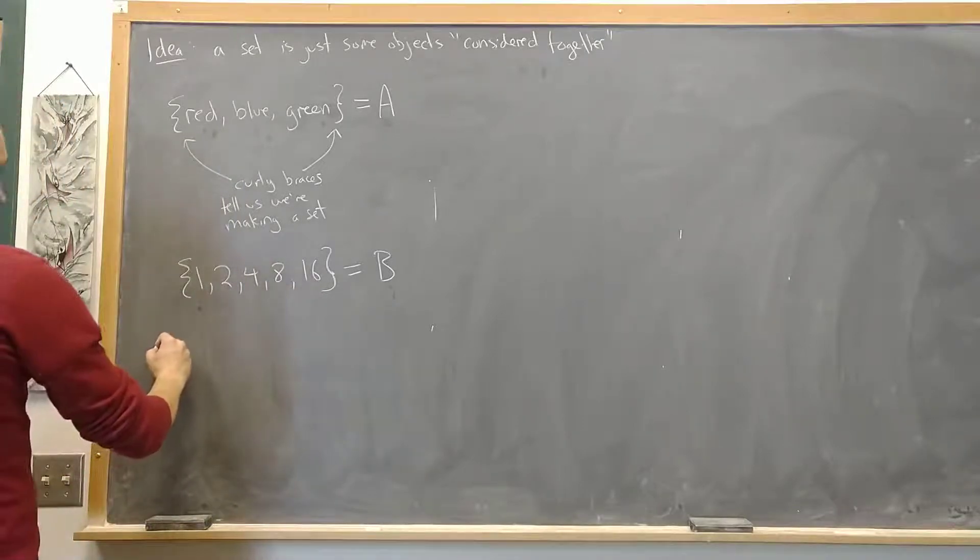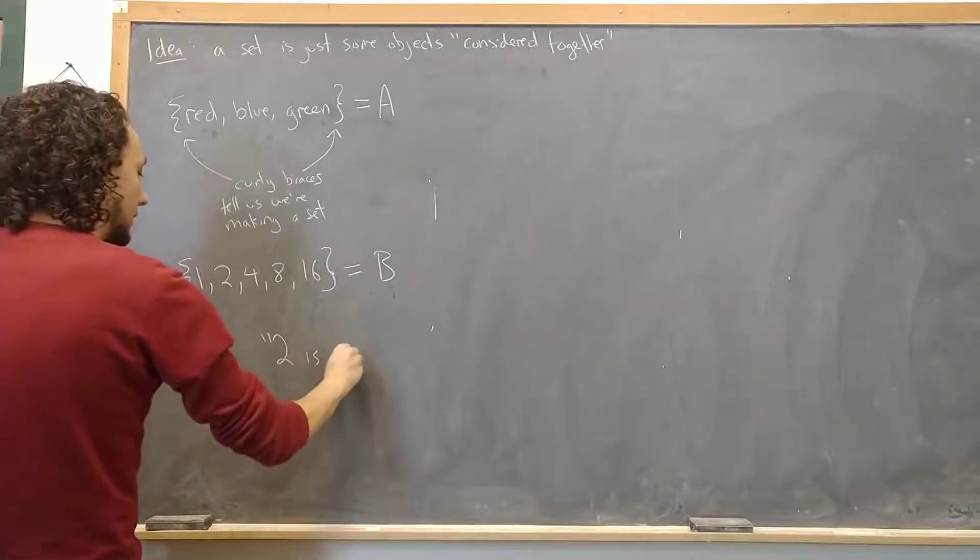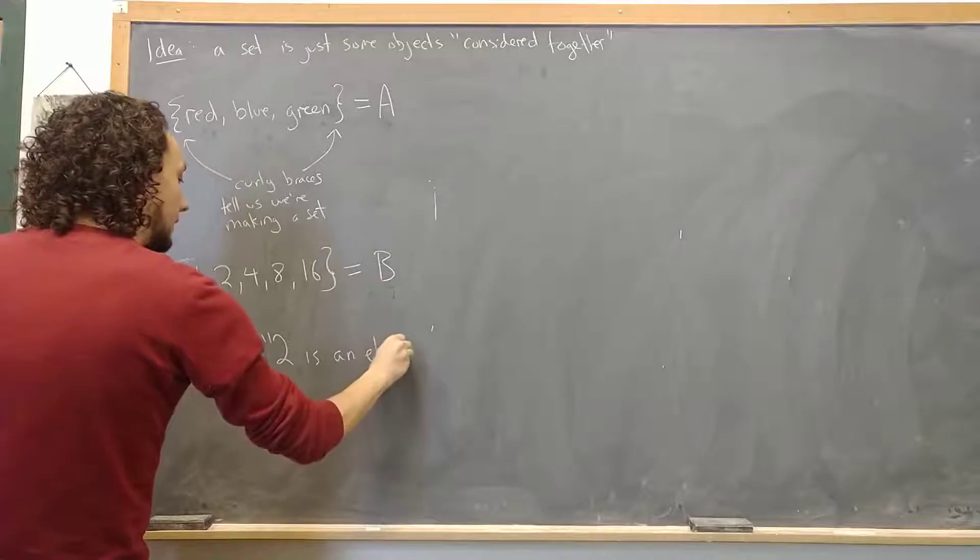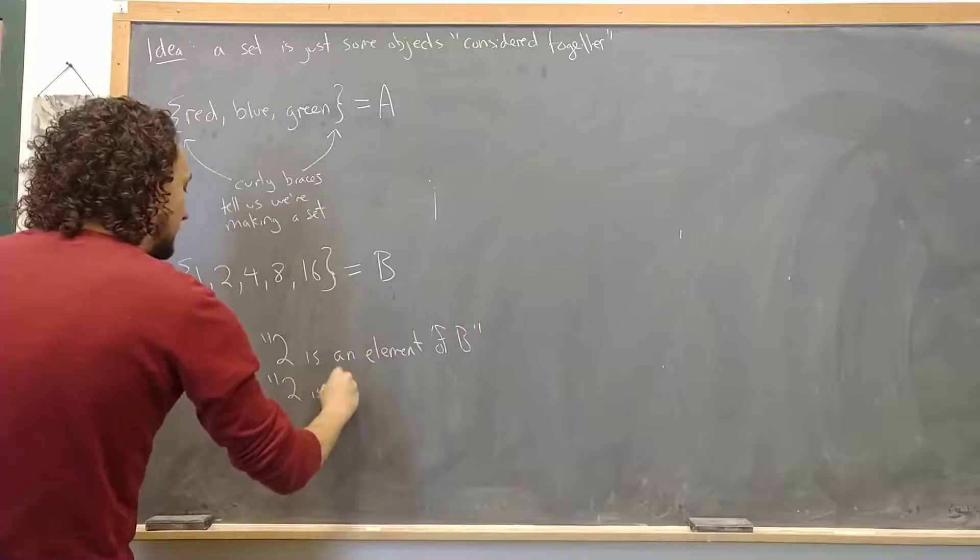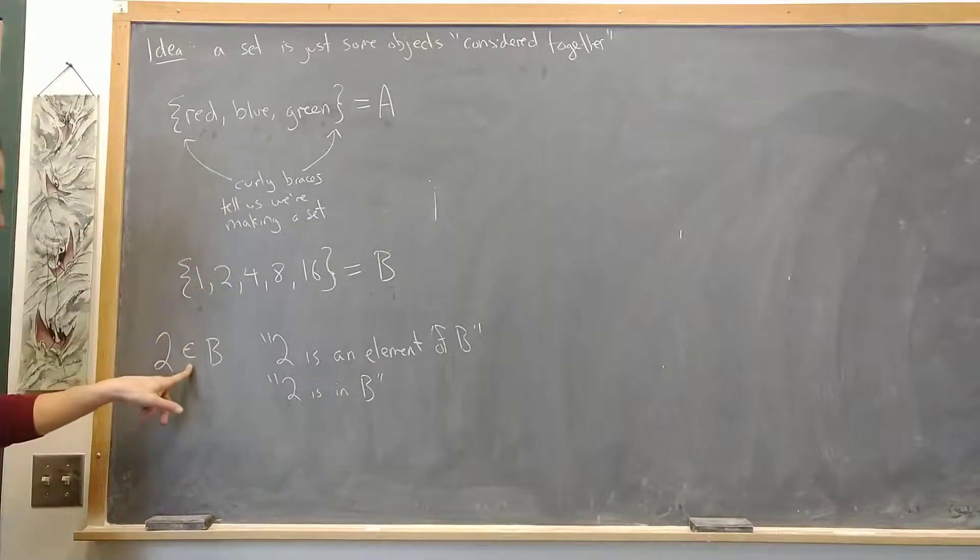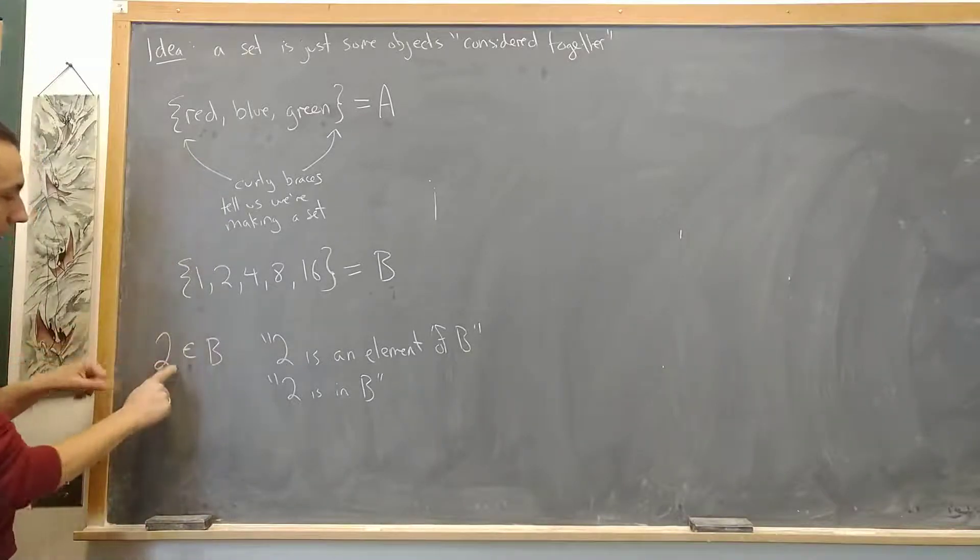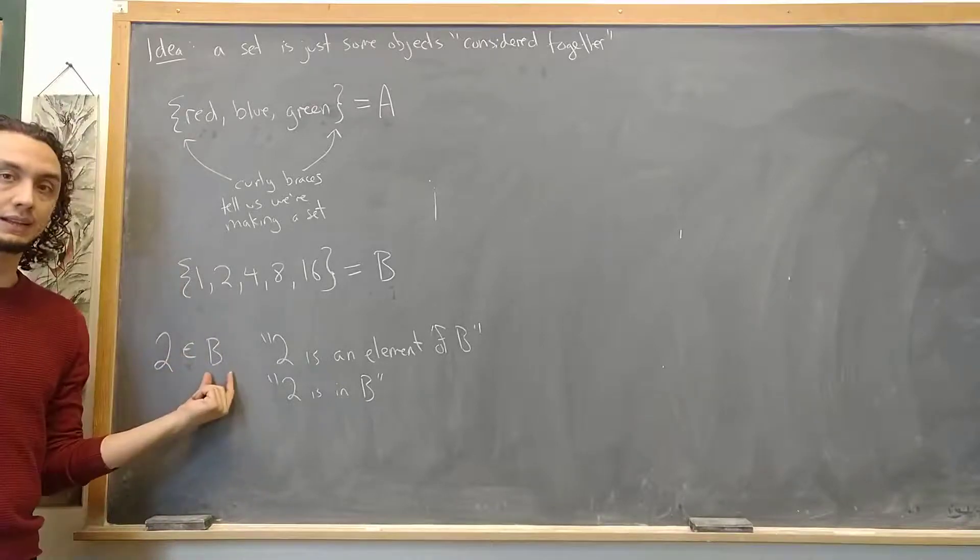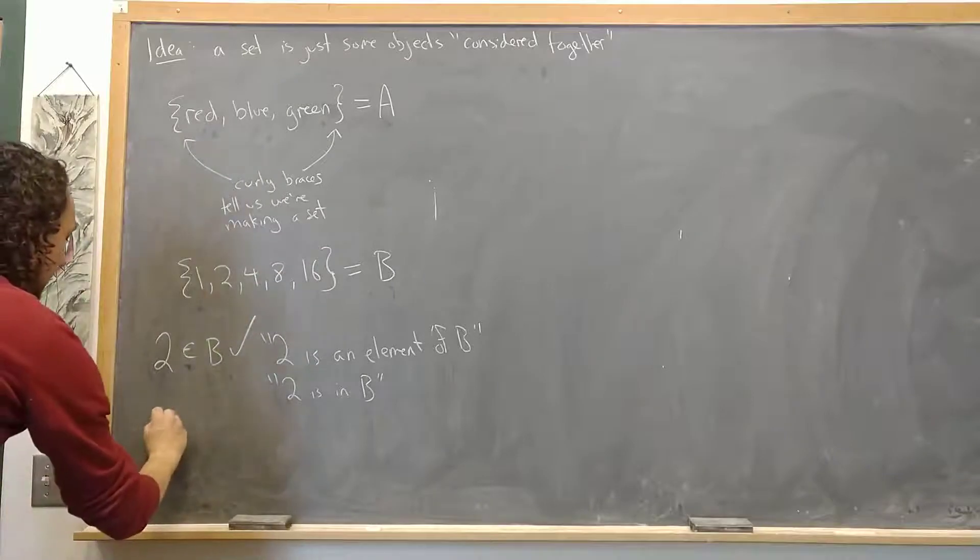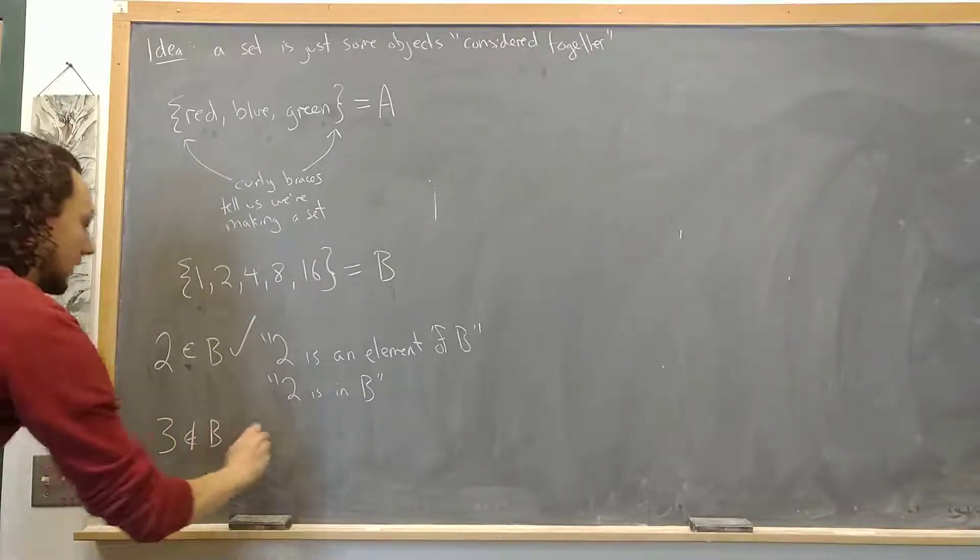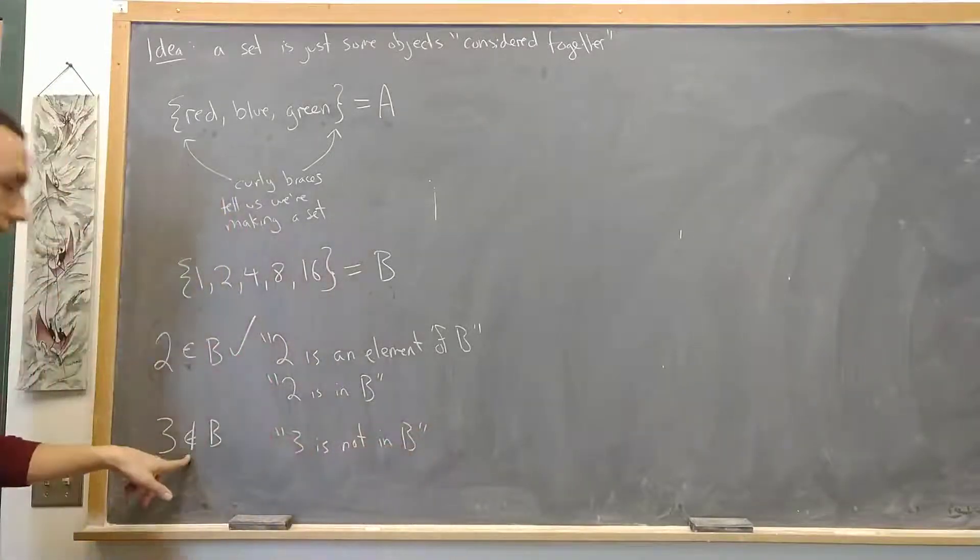Now I write things like, I might write something like 2 is an element in B. So 2 is an element in or of B. Or sometimes just say 2 is in B. And so here I'm just using this Greek symbol epsilon. And what it is is it tells you this object is one of the things inside this set. So this checks out. 2 is indeed an element in the set B. Whereas 3 is not an element in B. 3 is not an element in B. And that's how you write that.